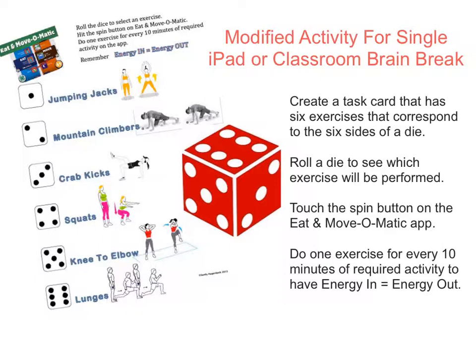This activity can also be modified for a single iPad or classroom brain break. Create a task card that has six exercises corresponding to the six sides of a die. Roll the die to see which exercise will be performed, then touch the spin button on the Eat and Move-O-Matic. Do one exercise rep for every 10 minutes of required activity to have energy in equal energy out. So let's stand up!